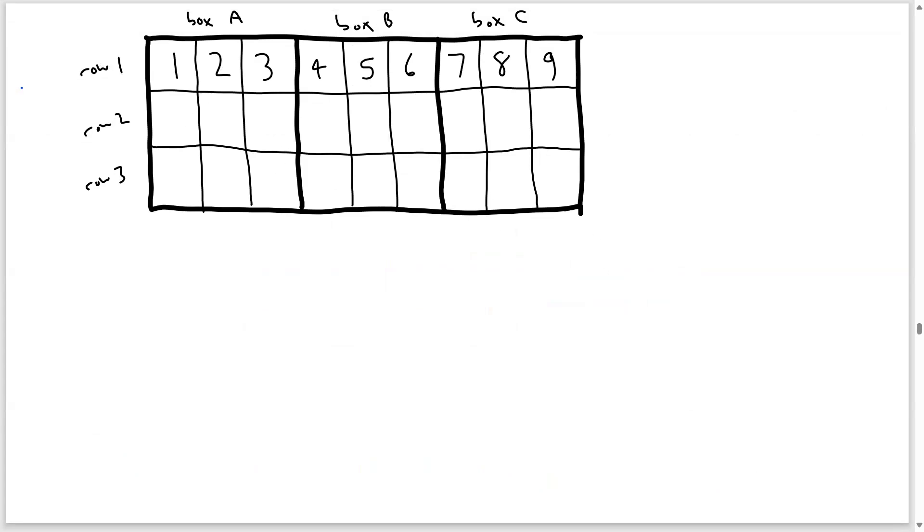I'm going to do casework because we don't know what row 2 can have. The only thing we know is that the three numbers in box A cannot be 1, 2, 3—they have to be three of the numbers from 4 to 9. Similarly, the three numbers in box B cannot be 4, 5, 6. And the third box cannot have 7, 8, 9.